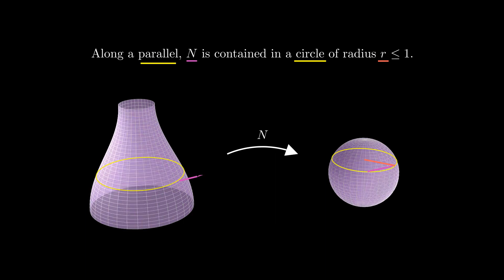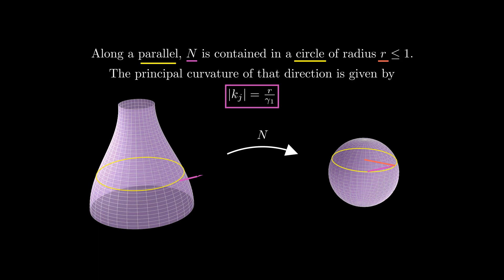Restricted to a parallel, the Gauss map has image on a circle of radius r. From here it is easy to compute that in absolute value, the principal curvature corresponding to this parallel is given by r over γ₁, where γ₁ was the distance from gamma to the axis of rotation, and the radius of the parallel we are looking at.